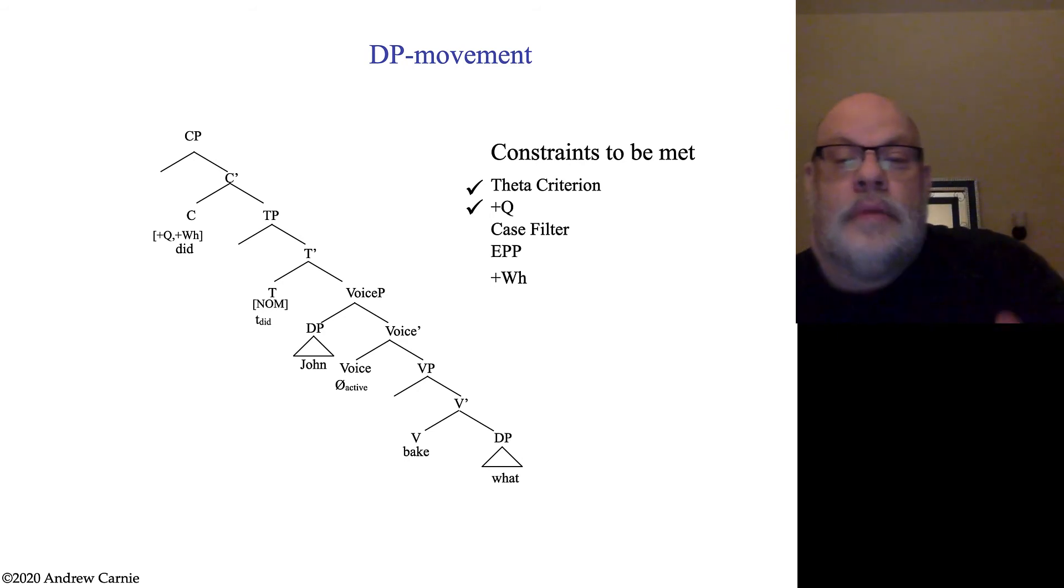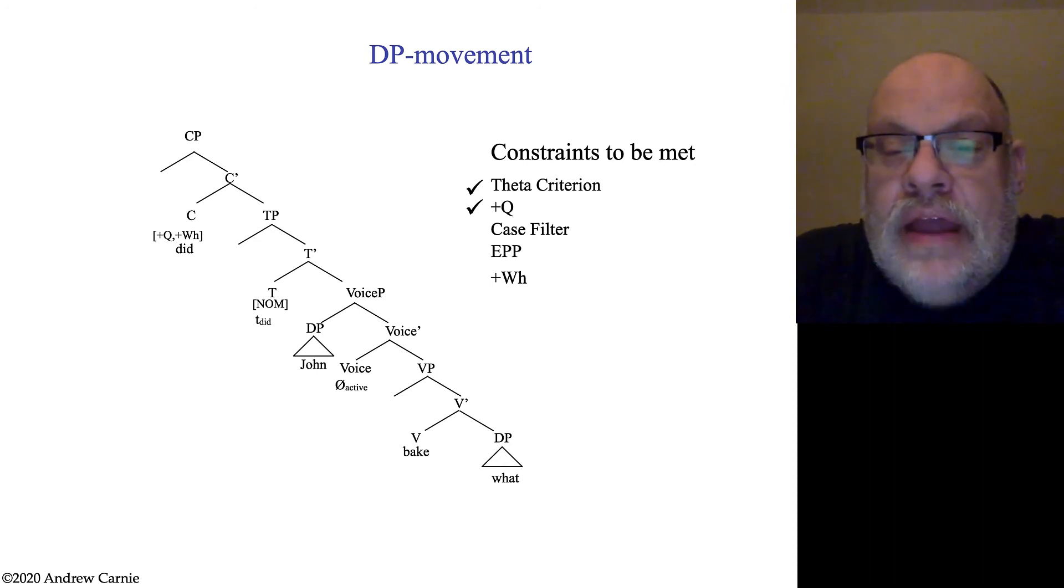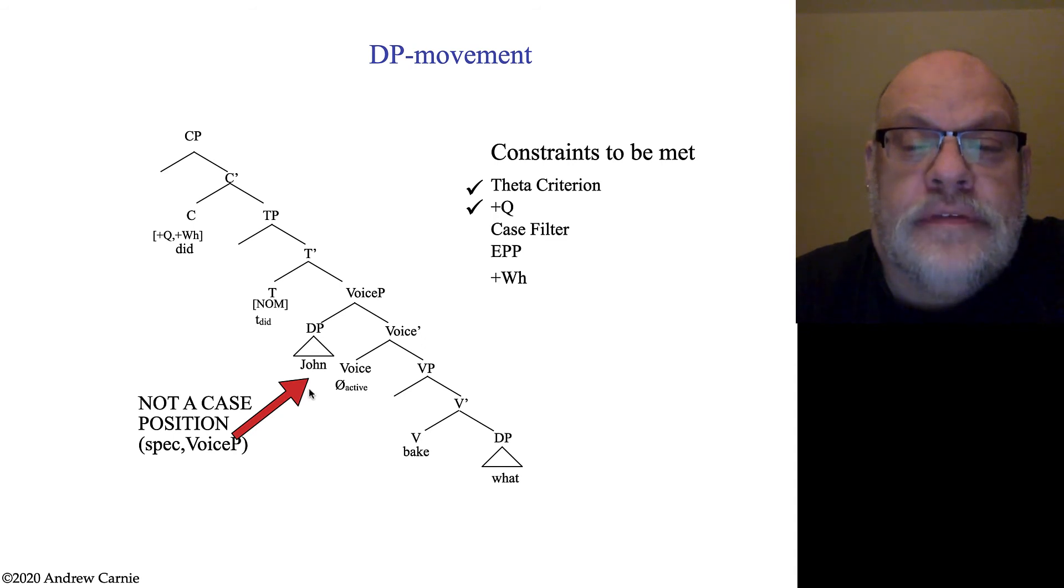Next thing we have to look at is whether or not all the DPs have case. Remember that the case filter holds after you do all the movements. But let's just make sure that it will be met at the end. So, we have two DPs. We have the DP here that's in the specifier of the voice phrase and we have the DP that's in the complement position to the verb. The specifier of the voice phrase is not a case position.